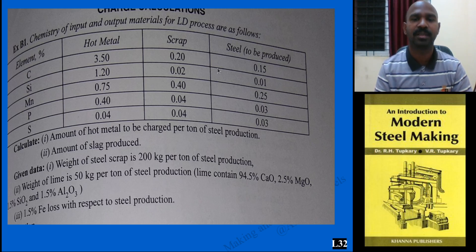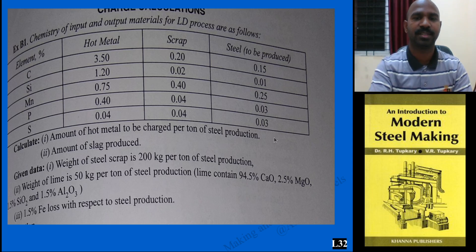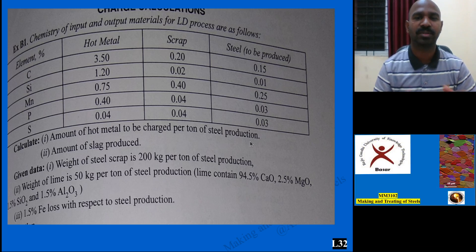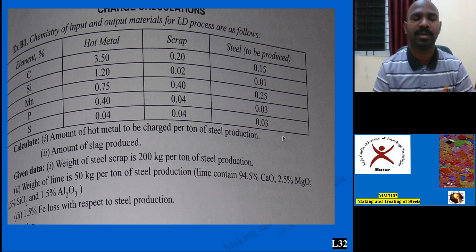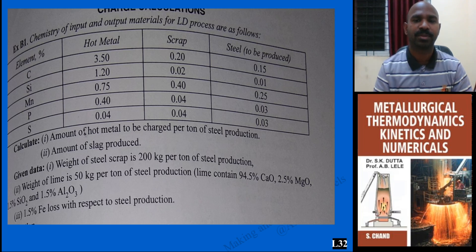The steel produced from the LD process contains carbon through sulfur. When you sum up all these elements and subtract from 100%, the rest is iron. Similarly, for the scrap and the hot metal, the rest is also iron.